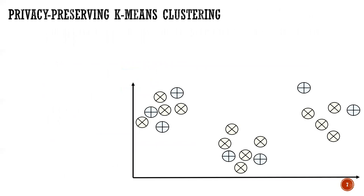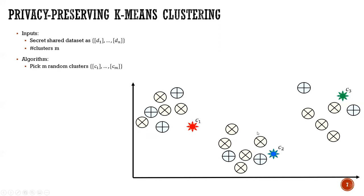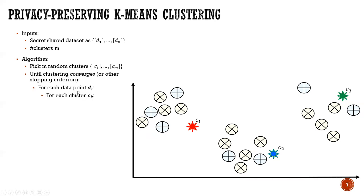I will now walk through our privacy-preserving K-Means clustering protocol. The input is secret shared between two servers, and throughout my presentation I use square bracket notation for shared values. The input also includes the number of clusters K. The first step of the protocol is to choose random initial cluster centers — here we choose three cluster centers: a red one, a blue one, and a green one.